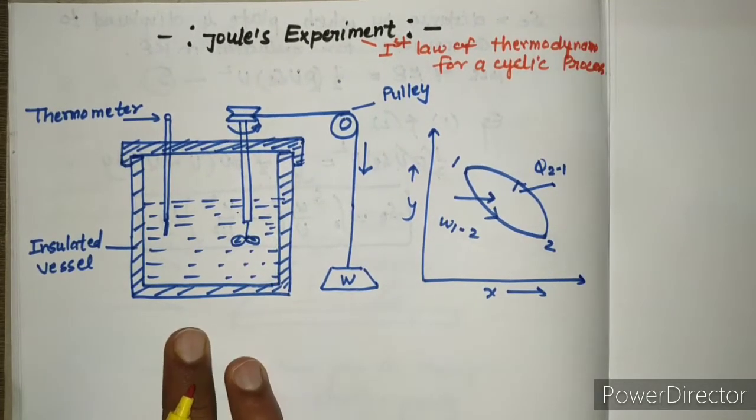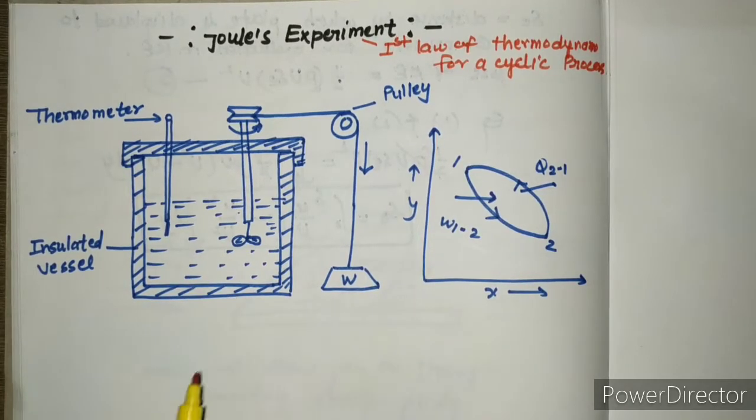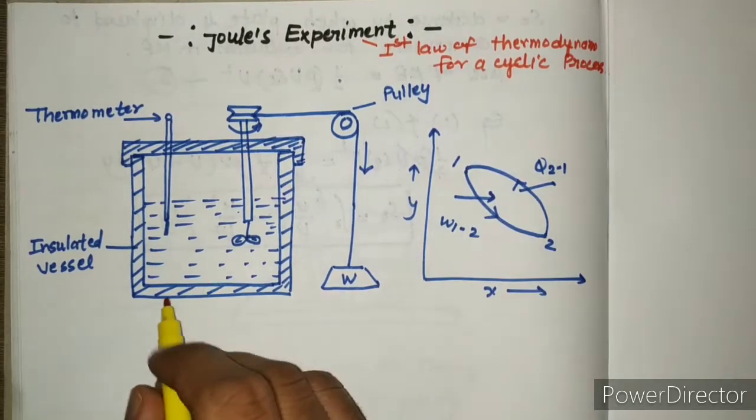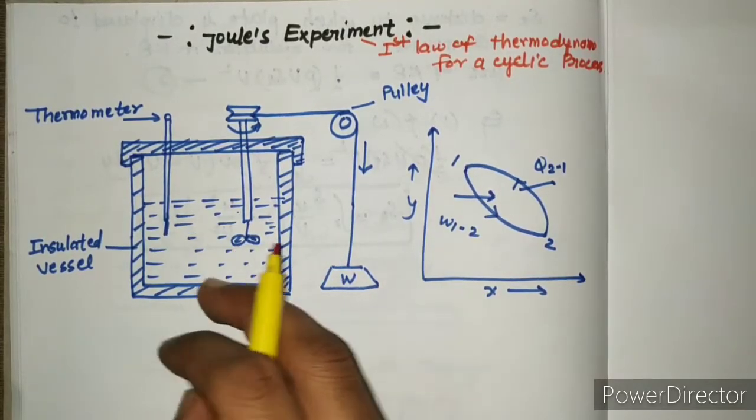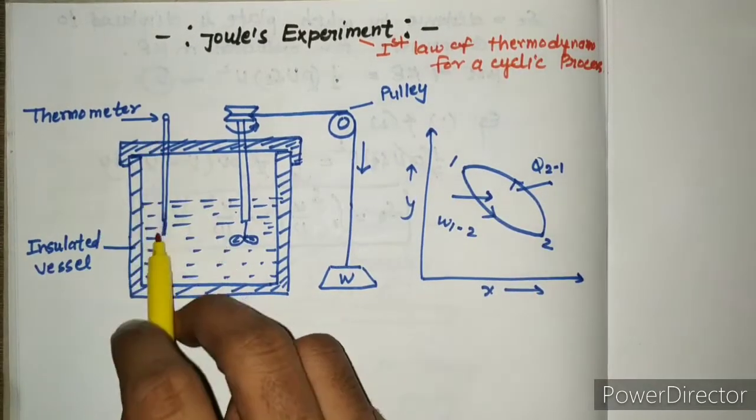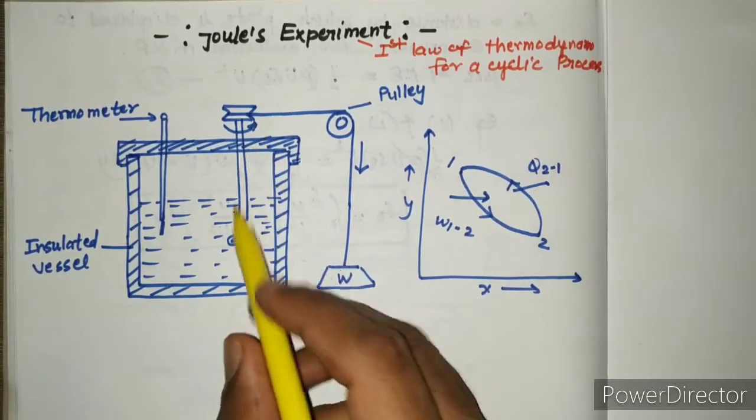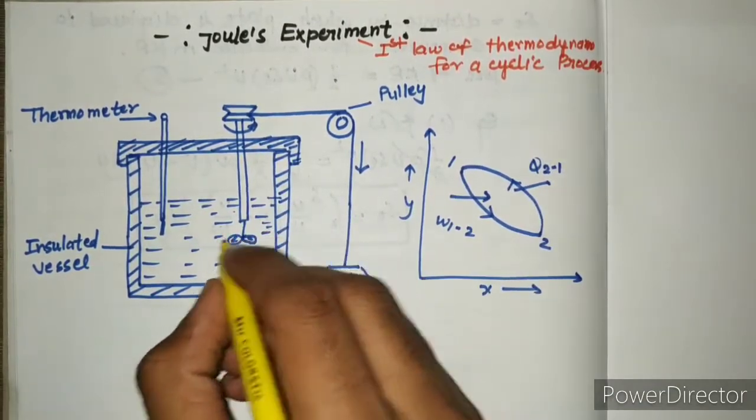For the verification of the first law of thermodynamics, let us consider an insulated vessel container with a thermometer and paddle wheel. This is called the paddle wheel.